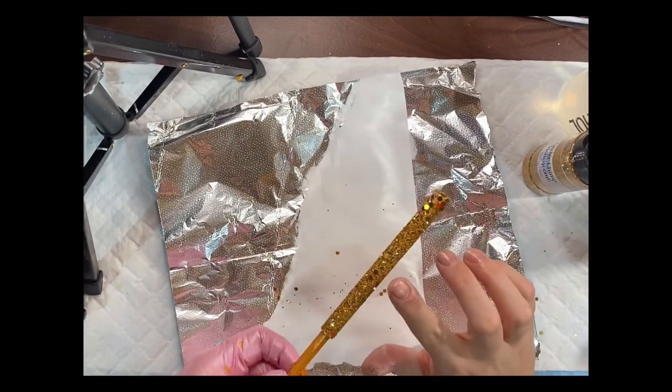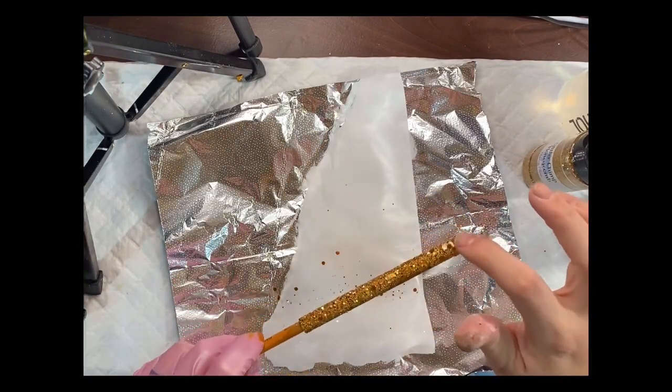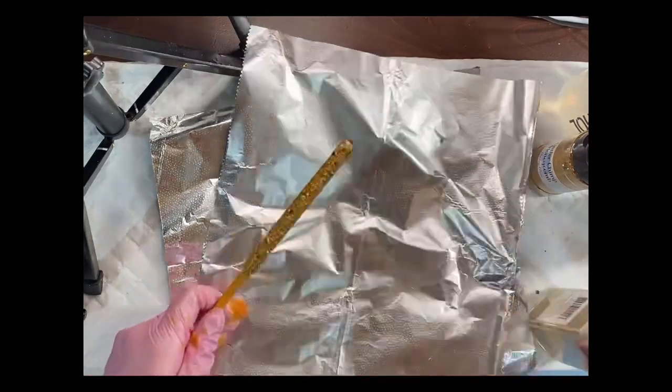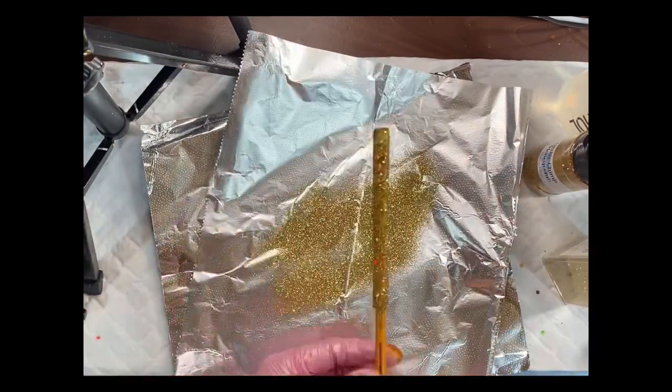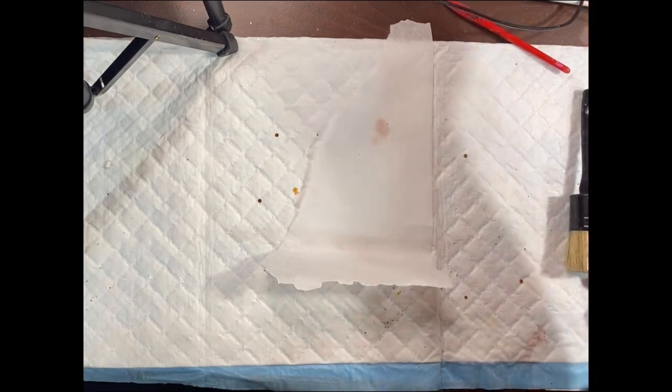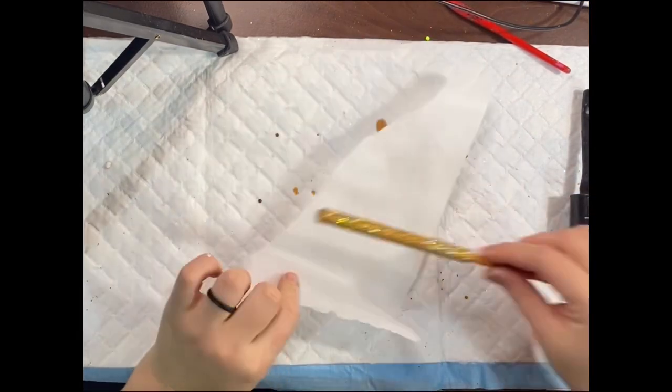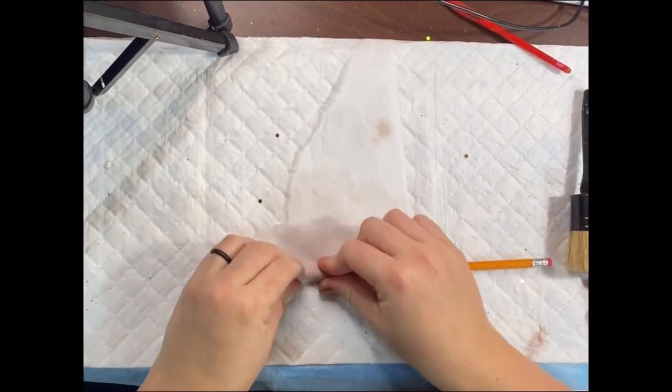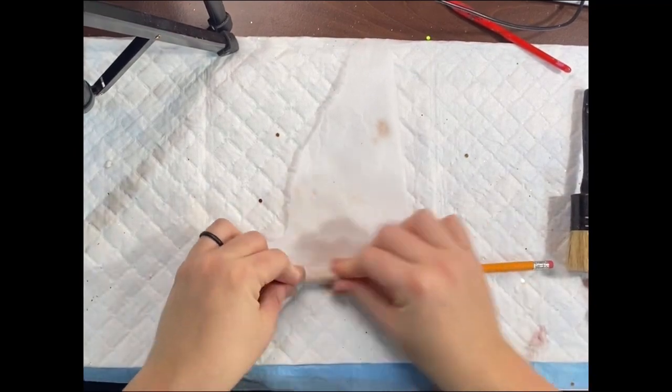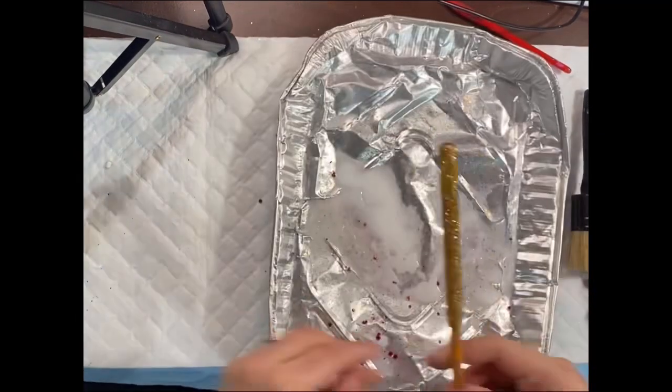If you've noticed any bare spots, you can apply a fine gold to kind of fill those in. Once that is dry, do the wax paper thing again, smushing. Now if you are using epoxy, you don't have to do this step. You can if you want, but if you're using Crystallite, you need to spray E6000 spray on top of your dried glitter.